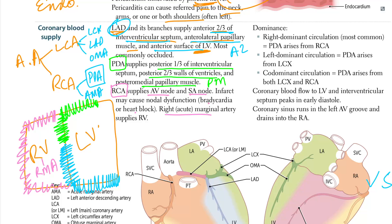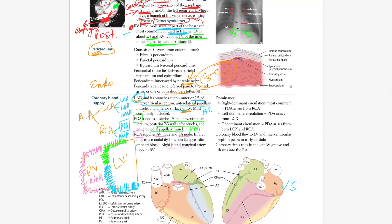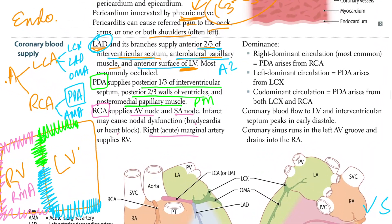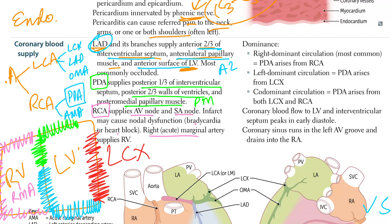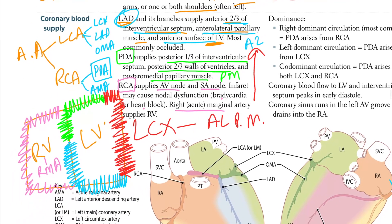The LCX — left circumflex artery — supplies the lateral wall of the left ventricle, the posterior one-third of the lateral ventricle wall, and also the anterolateral papillary muscle. So this covers the coronary blood supply of the heart.